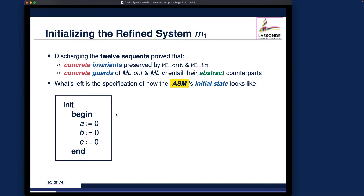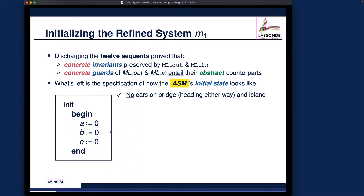For the concrete model we call this the concrete init event, which will initialize all the concrete variables a, b, and c. It definitely makes sense: initially we simply have no traffic flow from the mainland to the island, no traffic flow from the island to the mainland, and no cars in the island. So initially we just have none for each variable — no cars on the bridge heading either way and also no cars on the island.